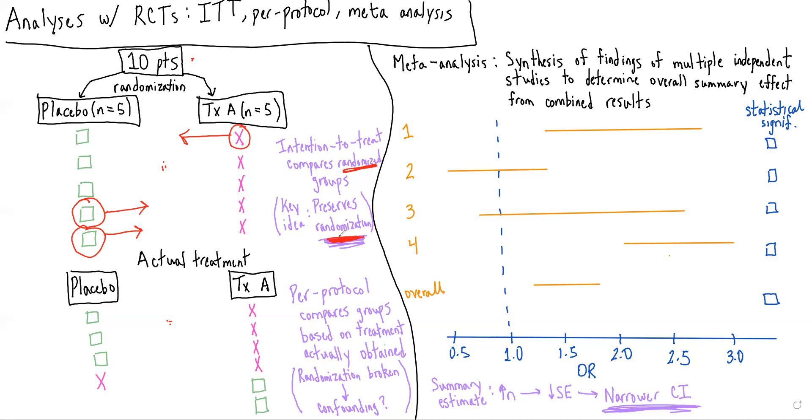And we know that the benefit of randomization is that, in theory, we are equally spacing confounders or equally dividing confounders between the two groups, such that the demographics should be similar, the comorbidities should be similar. And we're basically having the same level of confounder in each group, such that when we actually do the analysis and compare the outcome between the two groups, we can feel confident that if there is a difference present, it's not just due to some underlying difference between the two groups related to differences in comorbidities or demographics.